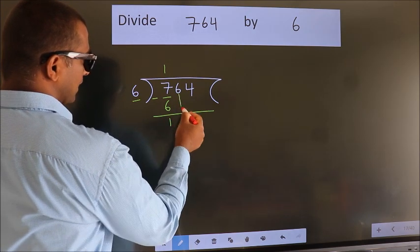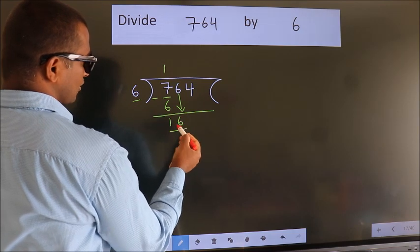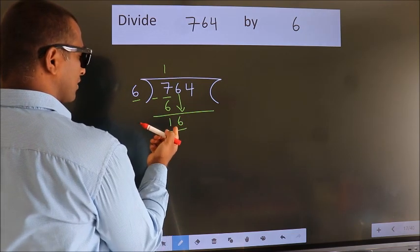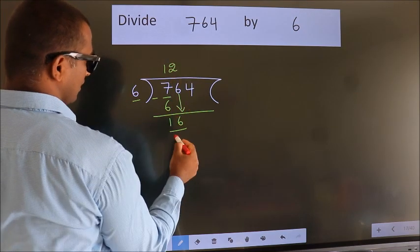After this, bring down the beside number. So, 6 down. So, 16. A number close to 16 in the 6 table is 6 twos, 12.